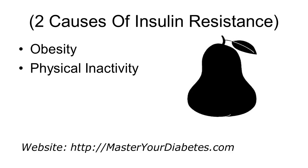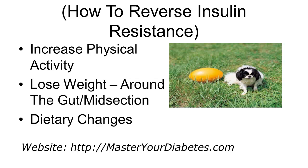One key point that must be understood when trying to get to the heart of the matter with type 2 diabetes is this: to conquer type 2 diabetes, you must reverse insulin resistance. Some of the best ways to do that are increased physical activity, losing weight specifically around the gut and midsection, and making dietary changes such as reducing refined carbohydrates and saturated fat, which contribute to weight gain.